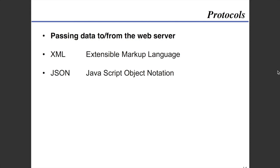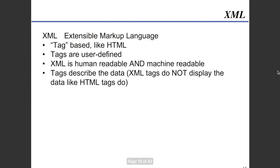The way that we pass data to and from a web server, there are basically two types we use today: XML, which is Extensible Markup Language, or JSON. These are essentially our standards for formatting that data. XML is a tag-based language. The tags are user-defined, XML is human-readable and machine-readable, and tags describe the data. XML tags do not display the data like HTML tags do.